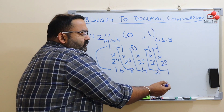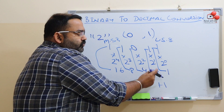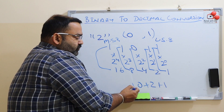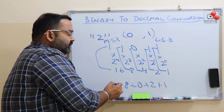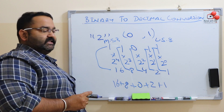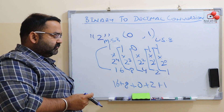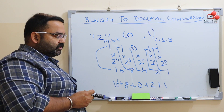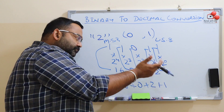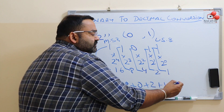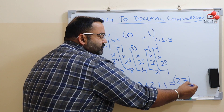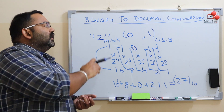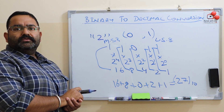So what do we get? 1 into 1, we get 1. Plus 1 into 2, we get 2. 0 into 4, we get 0. 1 into 8, we get 8. 1 into 16, we get 16. So we add them and we get the decimal number. 16 plus 8 is 24, plus 2 is 26, plus 1 is 27 to the base 10.